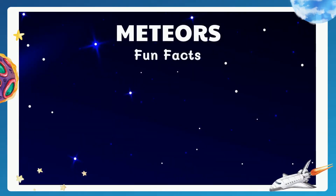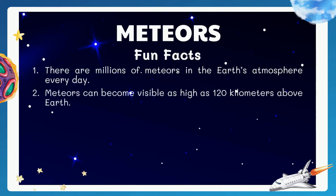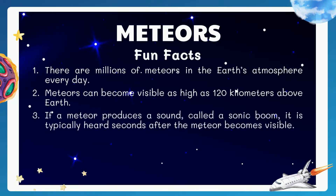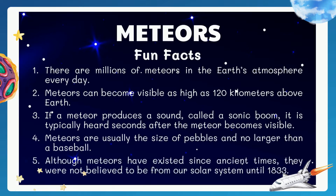Here are more interesting fun facts about meteors. There are millions of meteors in the Earth's atmosphere every day. Meteors can become visible as high as 120 kilometers above Earth. If a meteor produces a sound called a sonic boom, it is typically heard seconds after the meteor becomes visible. Usually, meteors are the size of pebbles and no larger than a baseball. Although meteors have existed since ancient times, they were not believed to be from our solar system until late 1933. Many more interesting facts can be found in your self-learning modules on page 4.